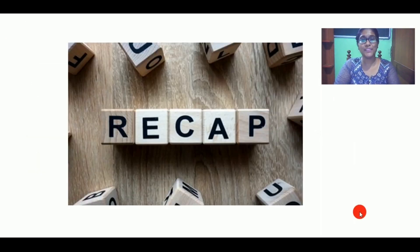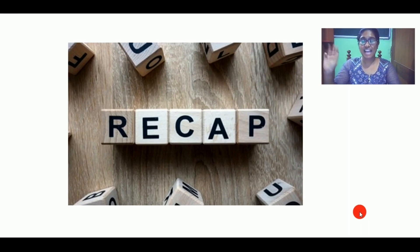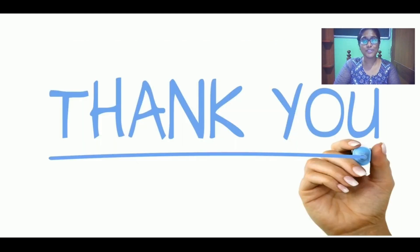Let us have a recap. Today we learnt about the parts of computer. The four main parts of computer are CPU, mouse, monitor, and keyboard. We also learnt about the internal parts of computer: hard disk, microprocessor, and CD drive. We also learnt about the supporting parts of computer: microphone, speakers, printers, and scanners. I hope you guys really learnt so much more about the computer. Thank you, students.